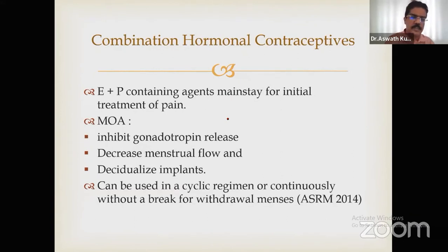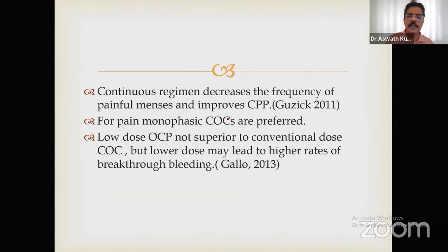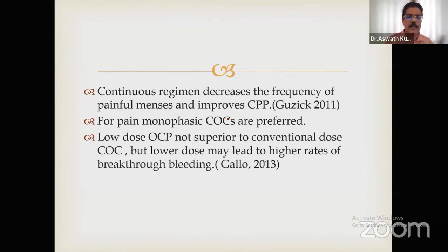COCs are used as the initial treatment of pain. The mechanism of action includes inhibition of gonadotropin release, decreased menstrual flow, and decidualization of implants. COCs can be used in a cyclic or continuous regime without a break. A continuous regime decreases the frequency of painful periods and improves chronic pelvic pain — this is preferred when the patient has dysmenorrhea. Monophasic COCs are preferred and are used at a low dose.